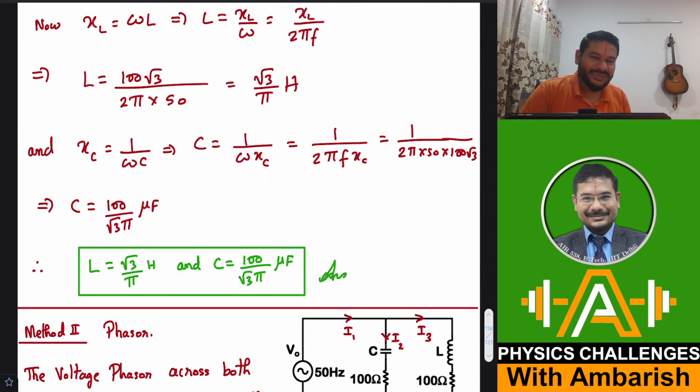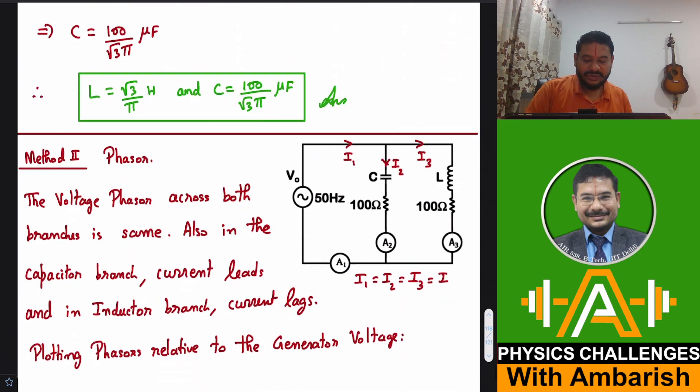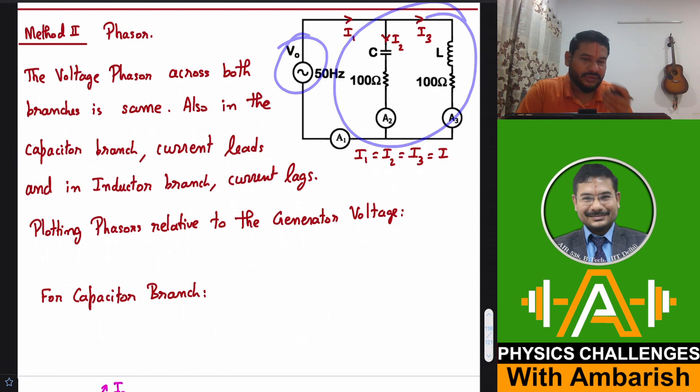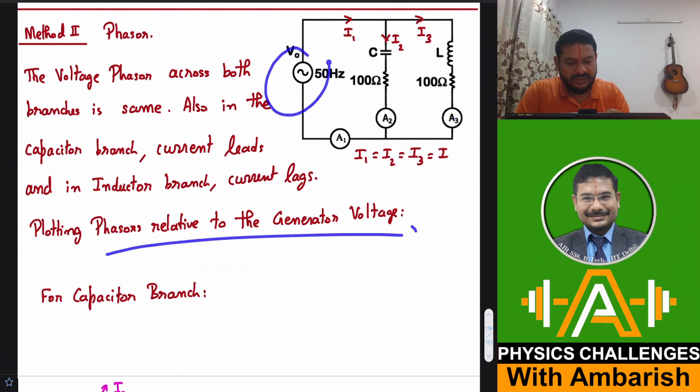Now I'll be doing it using the phasors. Second method is phasor. So voltage phasor across both the branches is same. So this voltage and this voltage are same. Also in capacitor branch current leads and in the inductor branch current lags. So you know that in capacitor the voltage lags or I can say alternately that current leads the voltage and in the inductor current lags behind the voltage phasor. So here it's a parallel circuit. So it helps to visualize in terms of drawing the phasors relative to the generator voltage phasor.